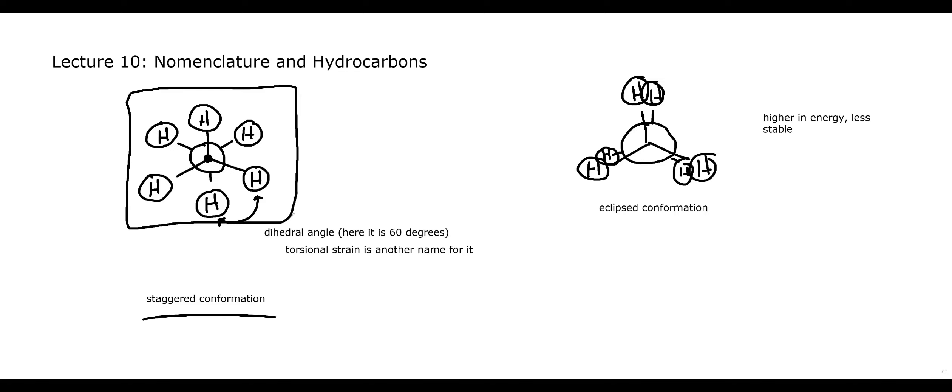We're about halfway through hydrocarbons and will finish in lecture 11. To summarize: we can draw hydrocarbons as Newman projections by looking straight down a carbon-carbon bond. They can adopt a staggered conformation — favored, lower energy, more space — or an eclipsed conformation — higher energy, less stable. We'll develop these concepts further and apply them to ring systems in the next lecture.